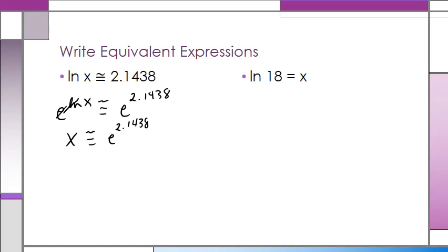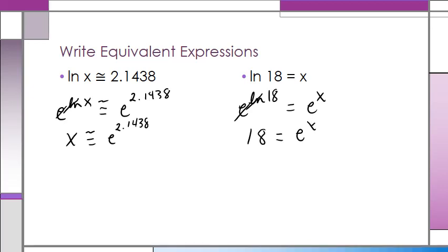How about ln of 18 equals X? Again, we're going to exponentiate both sides, so we've got E raised to the power of ln of 18 equals E raised to the power of X. As long as what we do to one side of the equation we do to the other, we've got a permissible operation. The natural base E and the natural log cancel, and we end up with 18 equals E raised to the power of X.